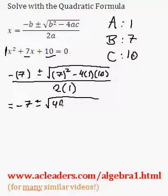7 squared is 49. Negative 4 times 1, negative 4. Negative 4 times 10, negative 40. All over 2 times 1, which is just 2.